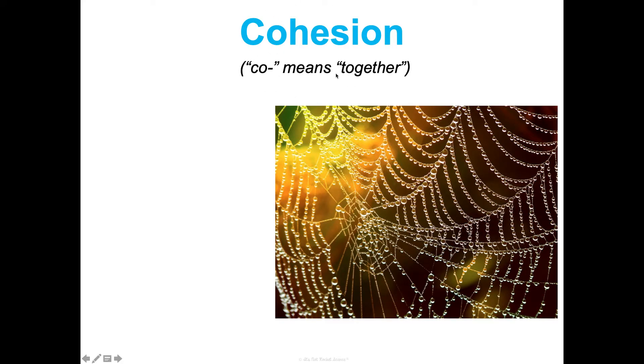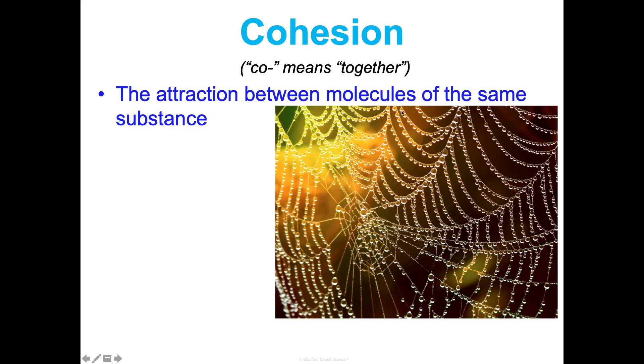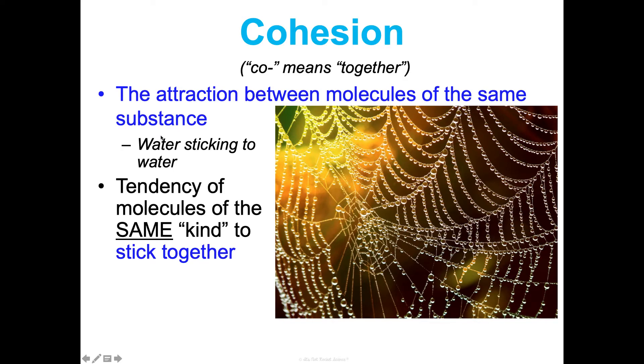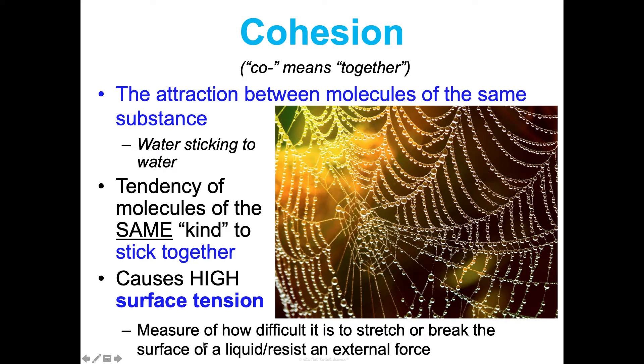Cohesion. Co, that prefix means together. It's going to come up a lot in biology. A lot of the same prefixes over and over again. So, together, the attraction. Cohesion is the attraction between molecules of the same substance. So, it's basically water sticking together with other water molecules. Another way of defining it is it's a tendency of molecules of the same kind to stick together. And what this does is this causes a really high surface tension, which is a measure of how difficult it is to stretch or break the surface of a liquid or its ability to resist an external force. And we see that with water. These water molecules like to stick to each other.